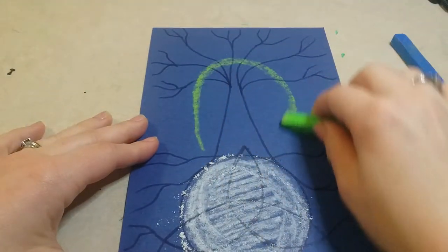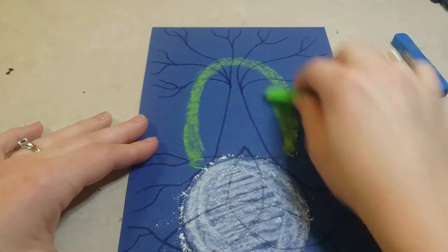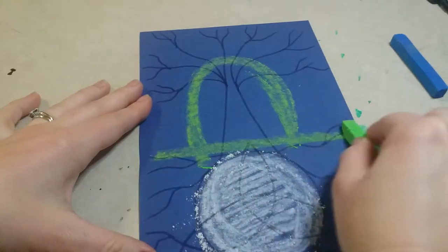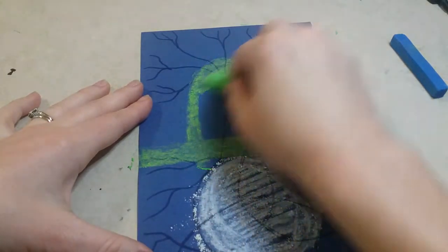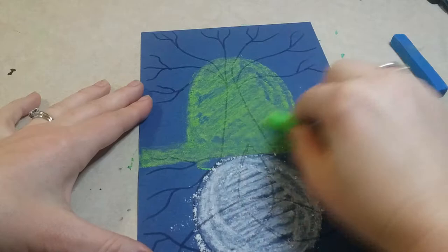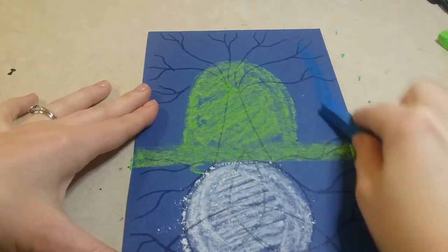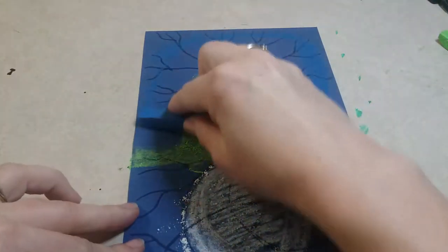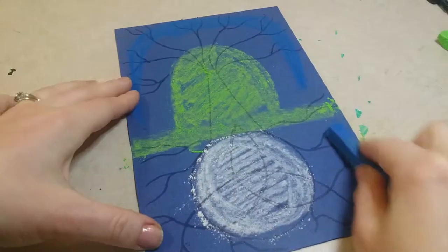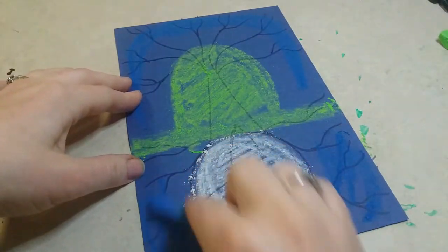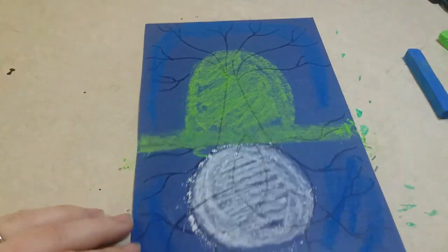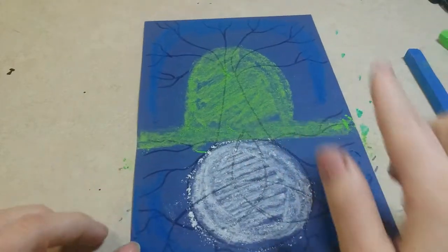Then along the line here, the grass where the grass would be, I'm gonna fill in here. And then with the blue, you're just going to go around the edges.